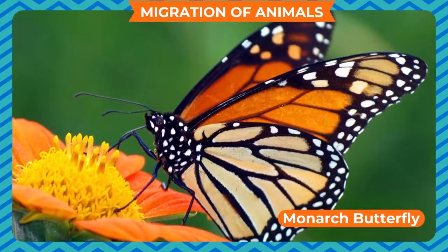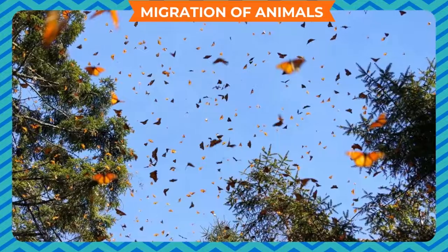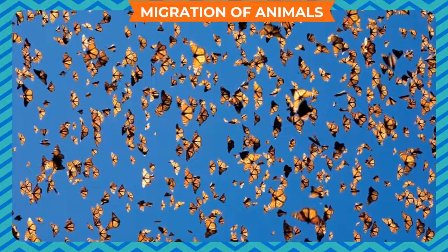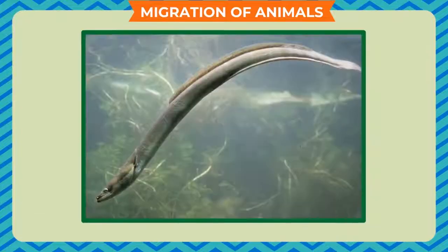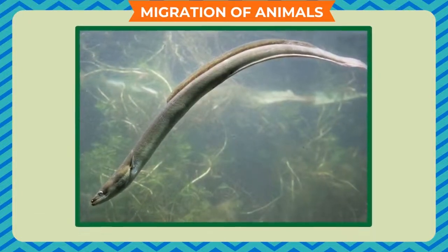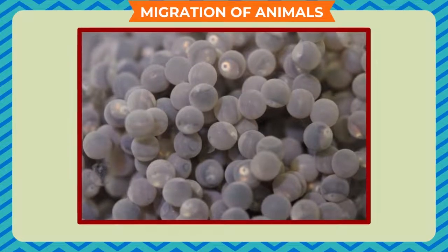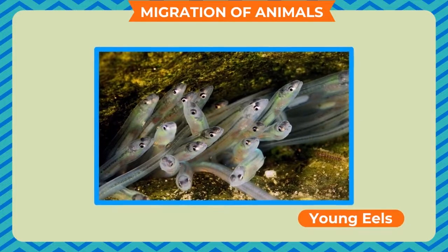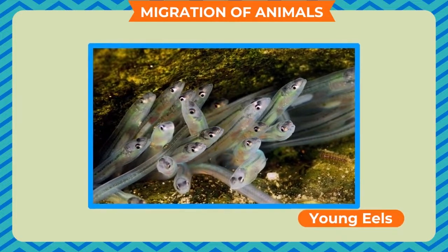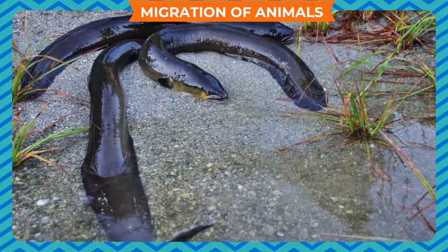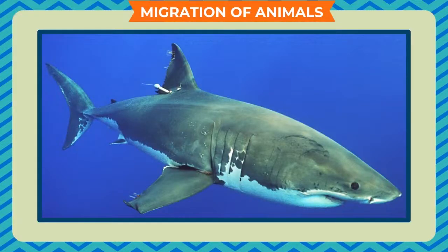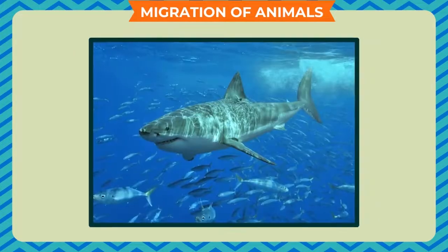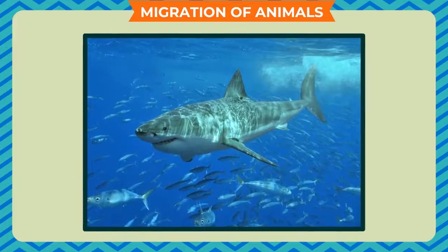Some butterflies such as the monarch butterfly also migrate from Canada to Mexico in winters and go back in summer. American eels that live in fresh water swim more than 2,400 kilometers to lay their eggs in the sea, away from other aquatic animals. The young eels come back to their parent's place, but by then their parents have died in the sea. Scientists use satellite tags to track the movement of migratory animals and study how these creatures decide where to migrate.